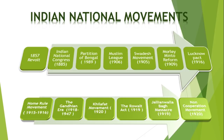Jallianwala Bagh Massacre, 1919. On April 13, 1919, a large number of people gathered at Jallianwala Bagh to protest against the arrest of Dr. Satpal and Seth Udeep. That was also the occasion of Baisakhi celebrations. General Dyer ordered them to open fire without any warning. A large number of people were killed — official figures say 379 people were killed and 1,200 injured, but unofficial accounts gave much higher figures. After the massacre, martial law was immediately enforced in Punjab.